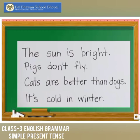The sun is bright. Now, that's a fact — it does not change. Everybody knows that the sun is bright. It is bright today, it was bright yesterday, and it will be bright tomorrow. That makes it a fact. Pigs don't fly — that's also a fact. Cats are better than dogs — you may not agree with this; this is my truth. I am making a generalization about cats and dogs in this example.